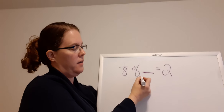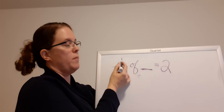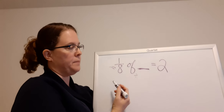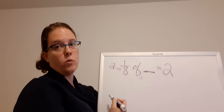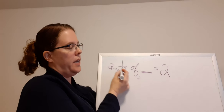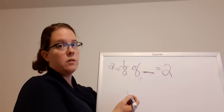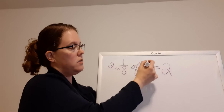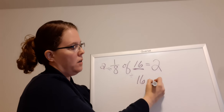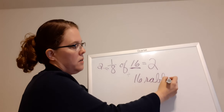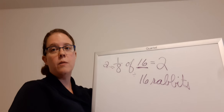So blank divided by eight equals — remember I have a one here so I can do it this way. So think: I've got to have something that equals two. What divided by eight equals two? Or do two times eight equals 16. So 16 rabbits in his pet store.